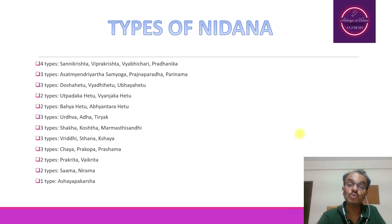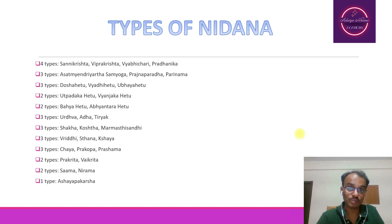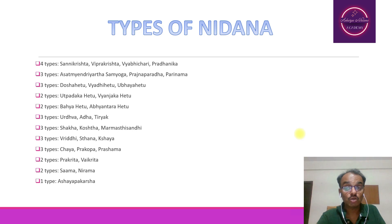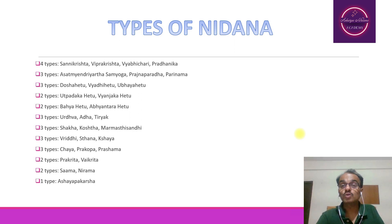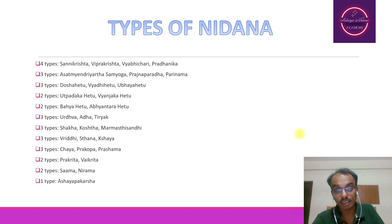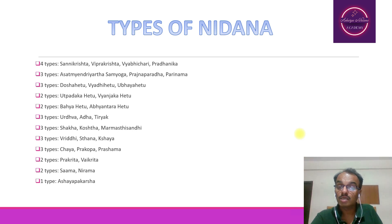Two types of the Nidana: Bahyahethu and Abhyantarahethu. The next classifications are related to Abhyantarahethu — that is Dosha and Dushya. Three types of the Nidana: Urdhva, Adhaha, Tiryak. Three types of the Nidana: Shaka, Kostha, Marmasthi Sandhi. Three types of the Nidana: Vriddhi, Sthana, Shaya. Three types of the Hethu: Chaya, Prakopa, Prashama. Two types of the Hethu: Prakrita, Vaikrita. Two types of the Hethu: Sama and Nirama. And one type of Hethu, that is Asayapakarsha. This is the description told in the Madhukosha commentary of Madhava Nidana, the fifth shloka of the first chapter.